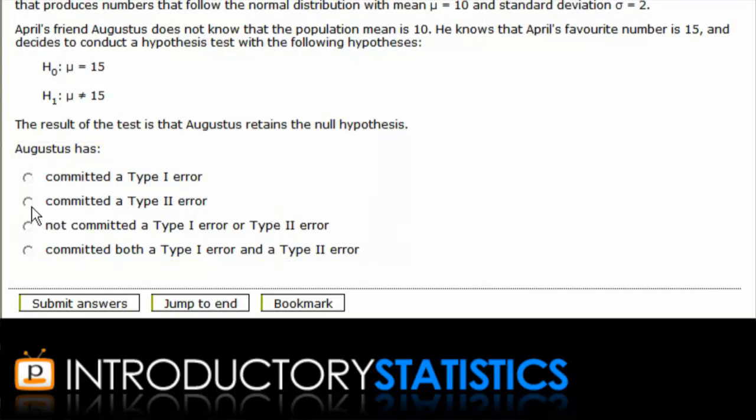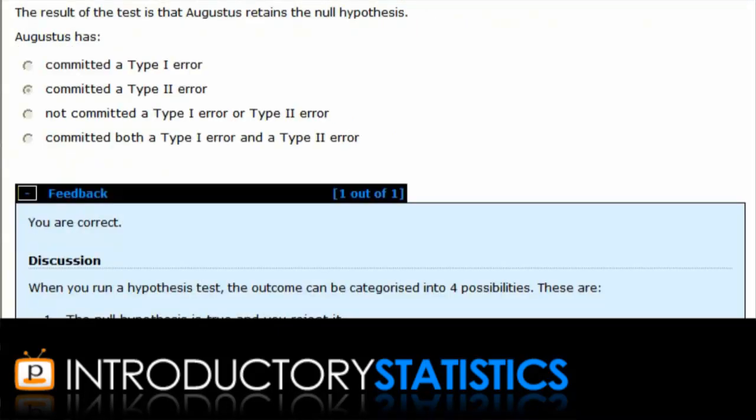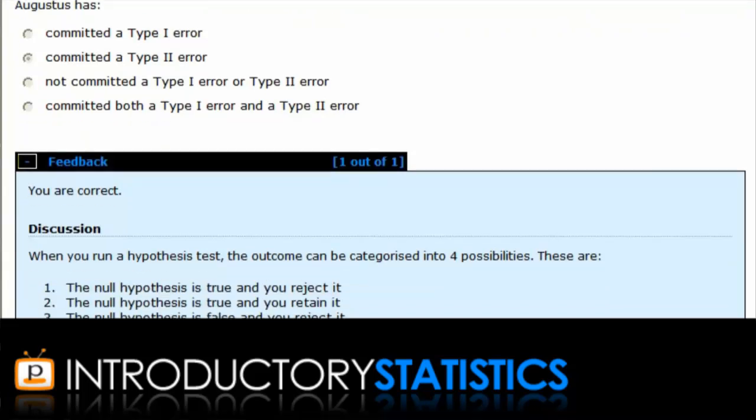He's failed to reject the null hypothesis that is false. So, this is a type 2 error. So, we'll submit that. And we see we get personalized feedback and an explanation of the question.